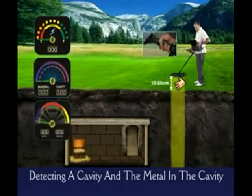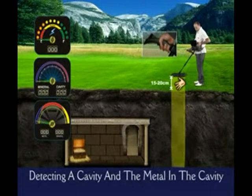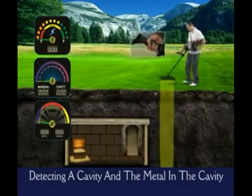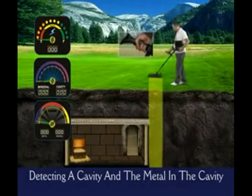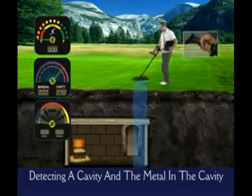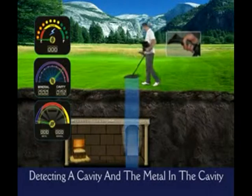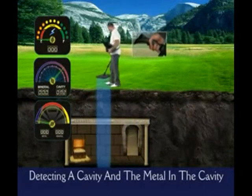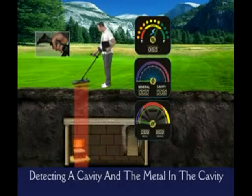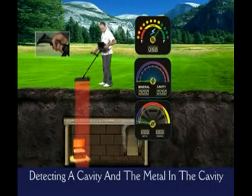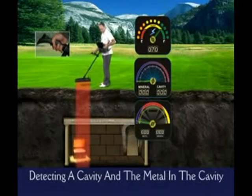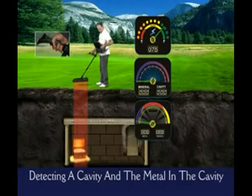Now you see a box of gold inside the cavity. When the user gets a cavity signal, the bar on the cavity indicator will rise according to the size of the cavity, and you will hear a different tone sound during detection. When the system detects the metal inside the cavity, the bar on the scope will move and notify the user that there's a metal inside the cavity.